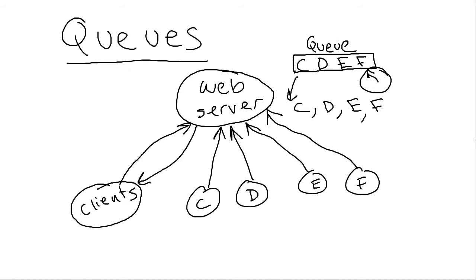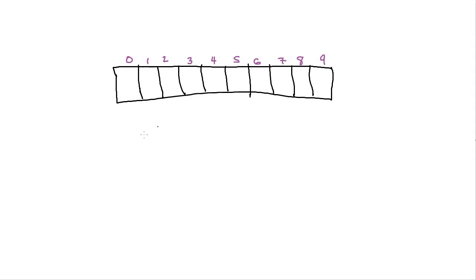Queues are also good for scheduling-type programs and anytime you want to simulate a line. Now let's talk about how to implement a queue using an array. Let's say we use an array of size 10. When we did this with a stack, we kept track of one variable — the top. But that's not enough for a queue because we need to keep track of both ends: the side we add to, called 'end,' and the side we remove from, called 'start.'